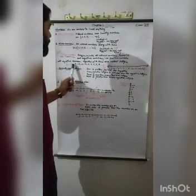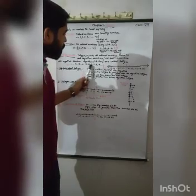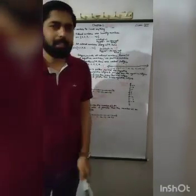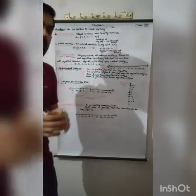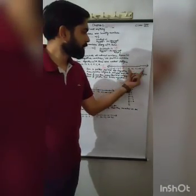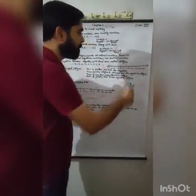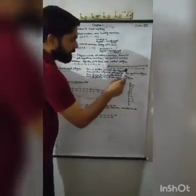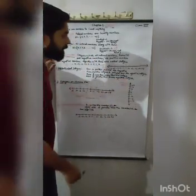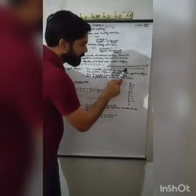Examples of integers: minus 4, minus 3, minus 2, minus 1, 0, 1, 2, 3, 4. In integers, we have three types of numbers. First, numbers on the right side are known as positive integers. Second, numbers on the left-hand side are known as negative integers. And third, there is 0.